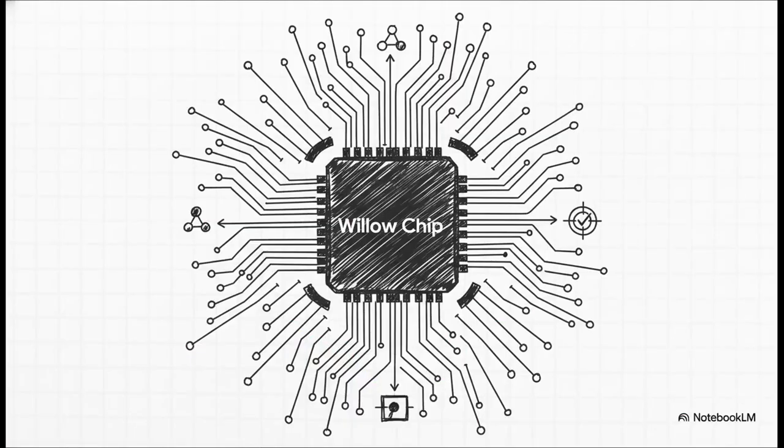Make no mistake, the Willow chip is an absolute beast. We're talking 105 qubits. But it's not just bigger, it's fundamentally better. It uses these superconducting circuits to make what are called quantum gates. You can think of them as the little operations that flip the qubits around. And the accuracy of these gates is just off the charts. That precision is what lets them run thousands of operations while keeping that quantum noise under control, a problem scientists have been banging their heads against for 30 years.